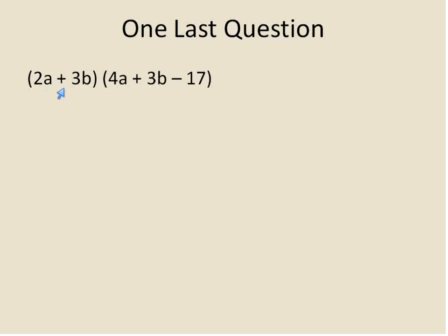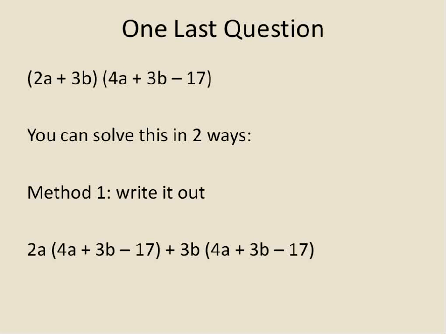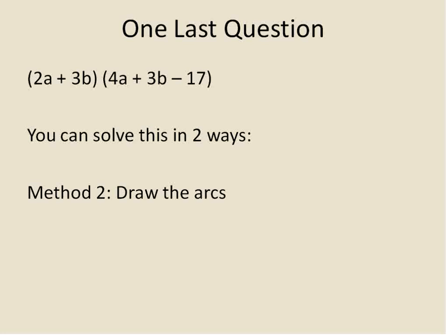One last question: this is a binomial times a trinomial. You can solve it one of two ways. The first way is to write it out — take the first term, 2a, and multiply it times the entire trinomial (4a plus 3b minus 17), then take the second term, 3b, and multiply it times the entire trinomial. The second method is to draw arcs, taking 2a and multiplying times each individual term, then 3b times each individual term. Both methods do exactly the same thing.